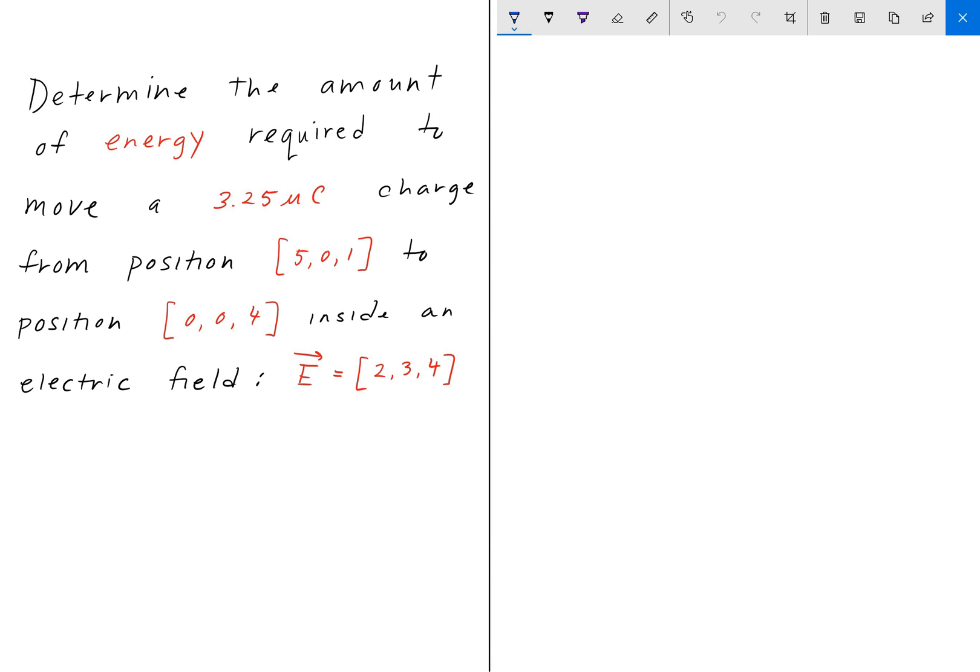Hey everyone, welcome back to Engineering Education. For this next video, we are asked to determine the energy required to move a 3.25 microcoulomb charge from position (5,0,1) - that's 5 units in the x direction, 0 units in the y direction, and 1 unit in the z direction - to position (0,0,4).